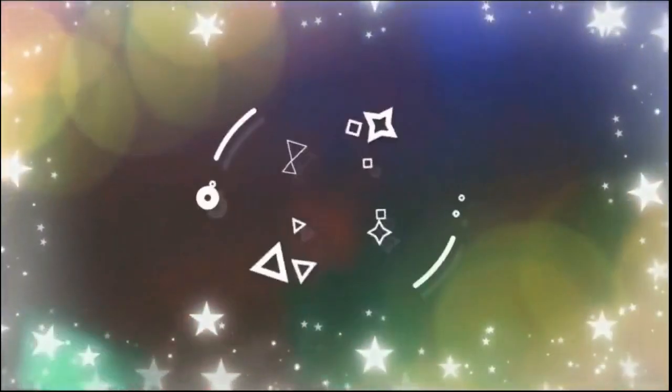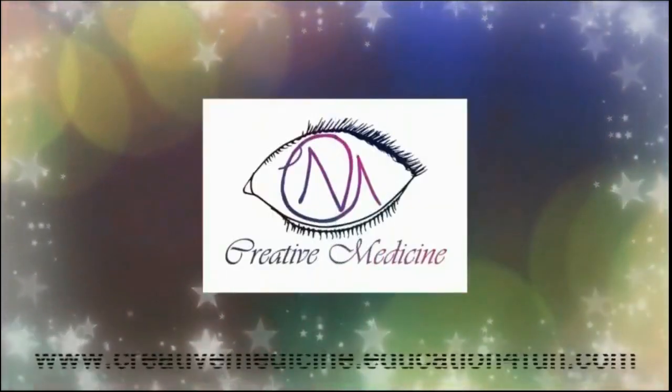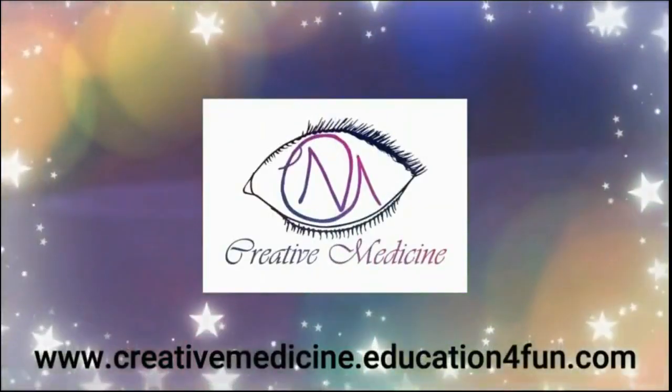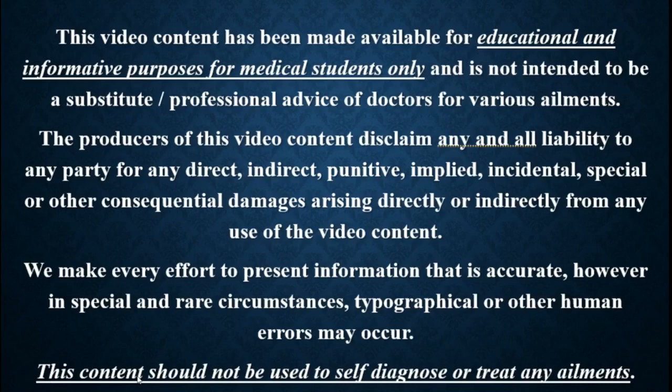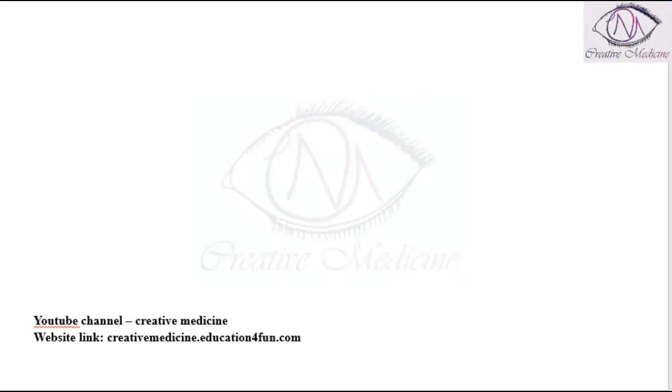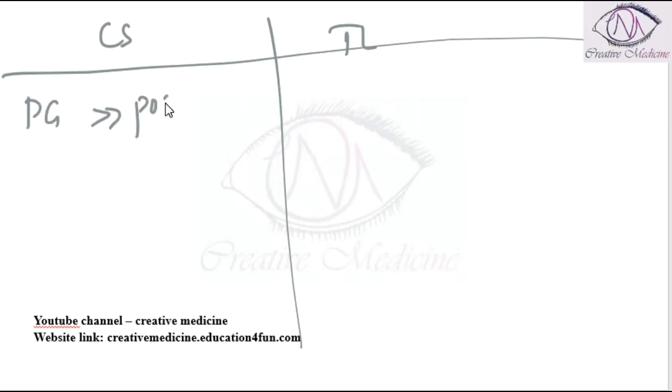Hello friends, welcome to Creative Medicine. In this lecture we will learn about differences between craniosacral and thoracolumbar pathways. In the craniosacral pathway, preganglionic fibers are longer than the postganglionic fibers, whereas in the thoracolumbar pathway, postganglionic fibers are longer.